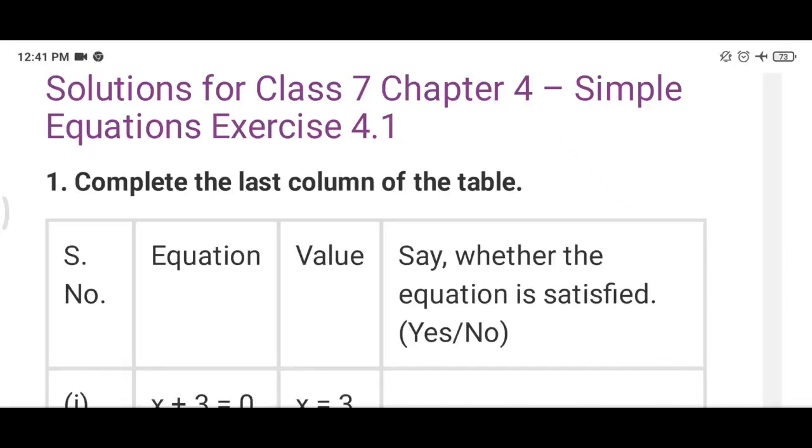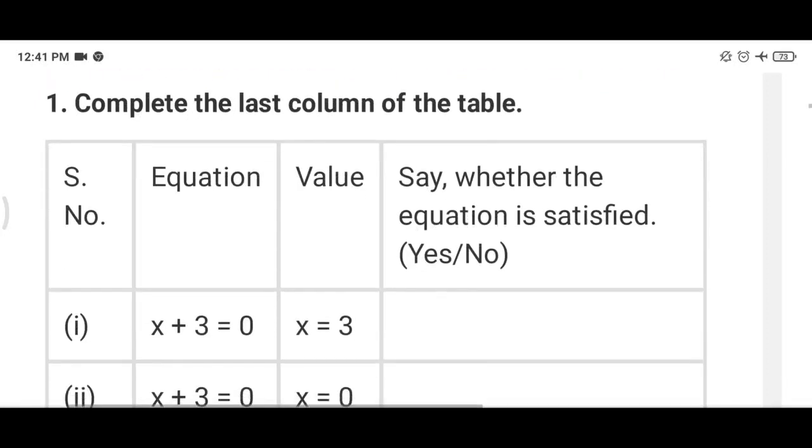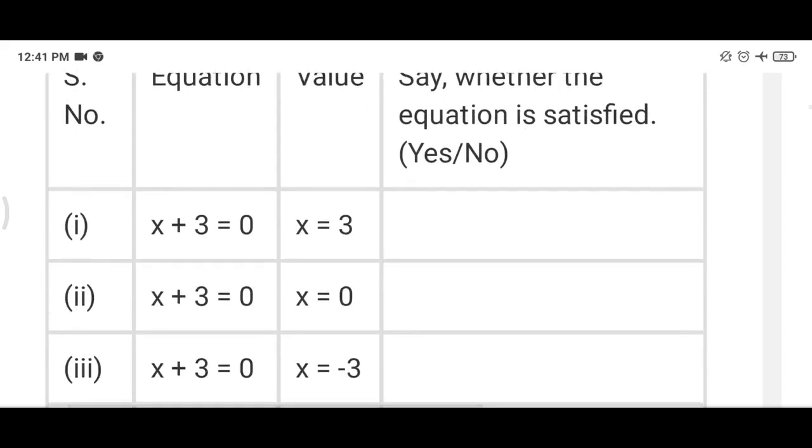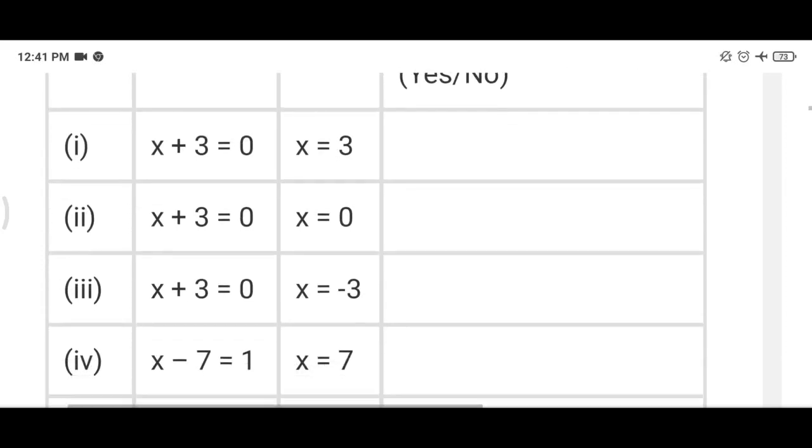This is exercise 4.1, chapter 4, class 7th. We are doing question number 1. This table we have to complete first. The equation is given and then we have to put value here. x equals to 3, x equals 0, x equals minus 3. These values are given, we will put one by one.